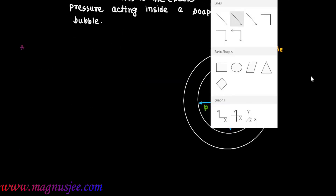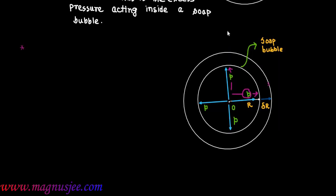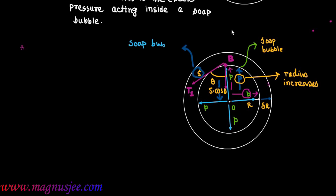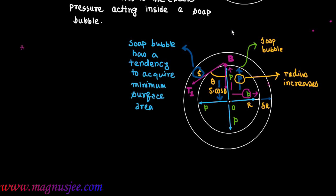The excess pressure p acts radially outwards on the concave side of the soap bubble, and the surface tension at point B acts along the tangent BT1. The surface tension S acts at an angle theta along the tangent, and the rectangular component S·cos(theta) acts inwards while the excess pressure p acts outwards. Due to excess pressure the radius increases, while surface tension S acts tangentially and the soap bubble has a tendency to acquire minimum surface area due to surface tension S.